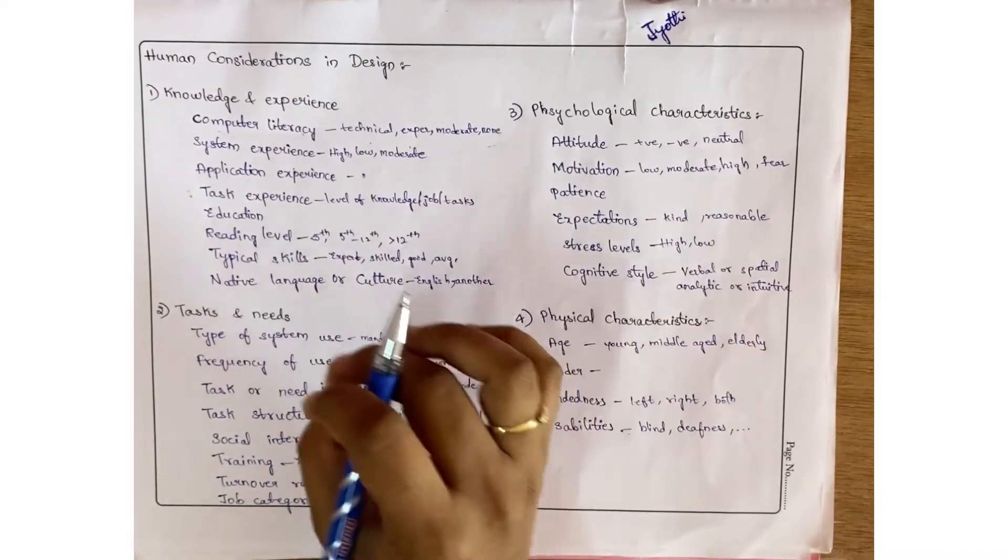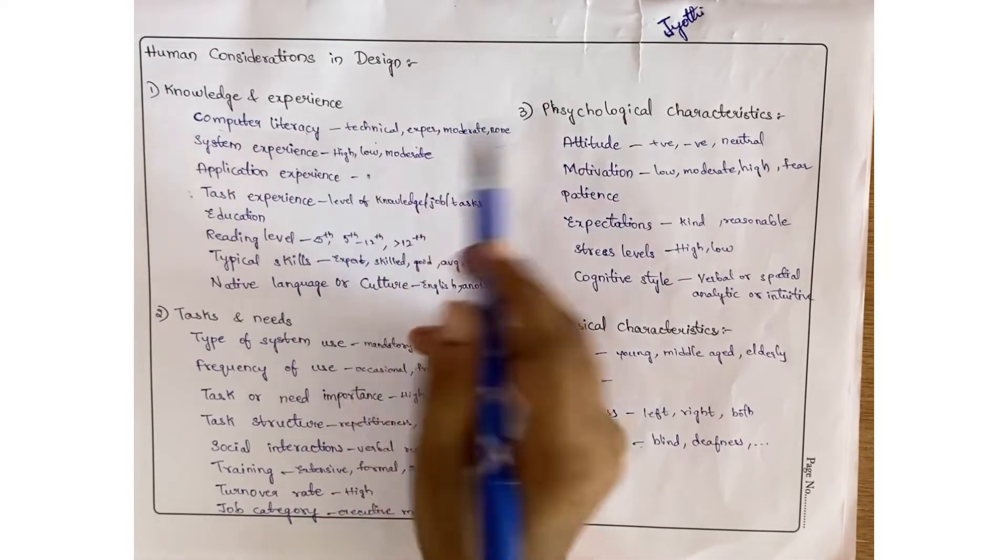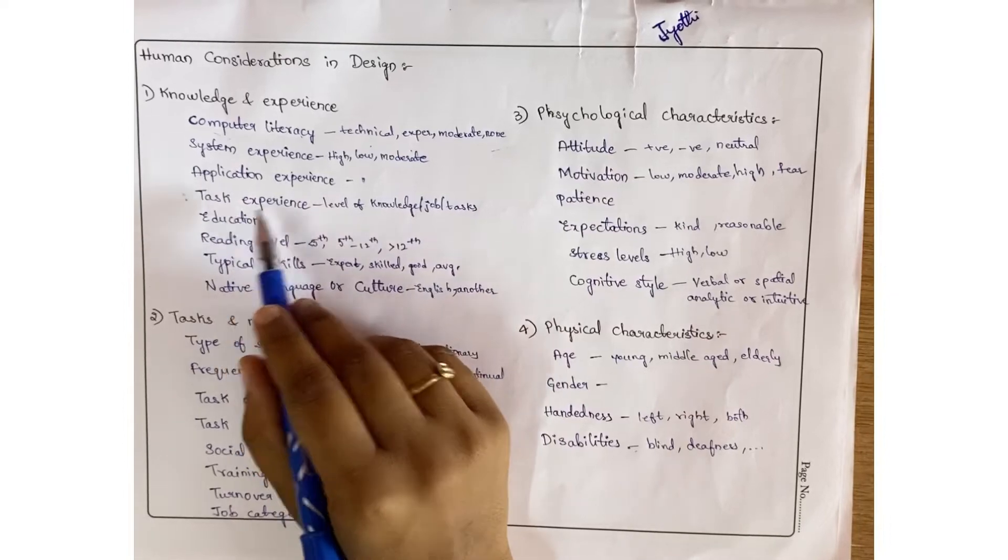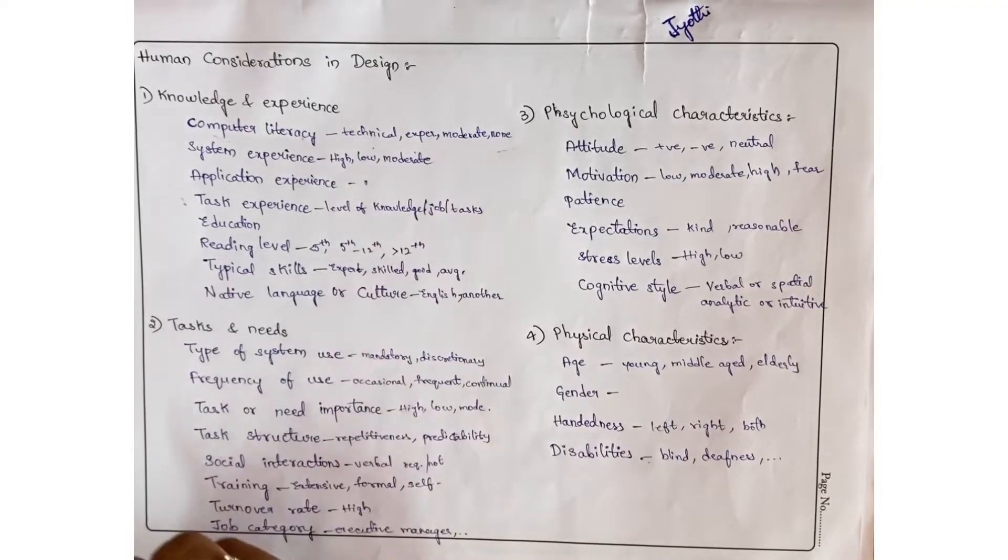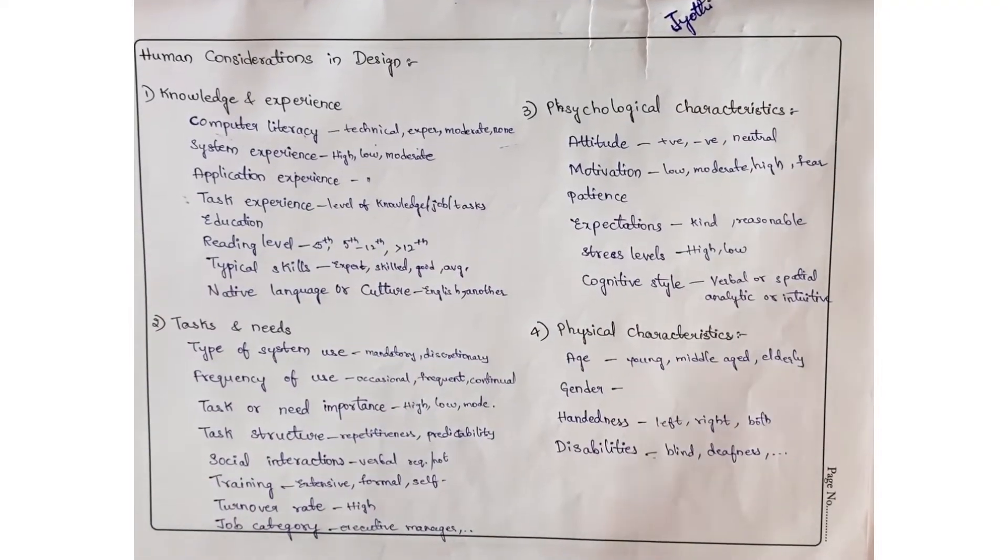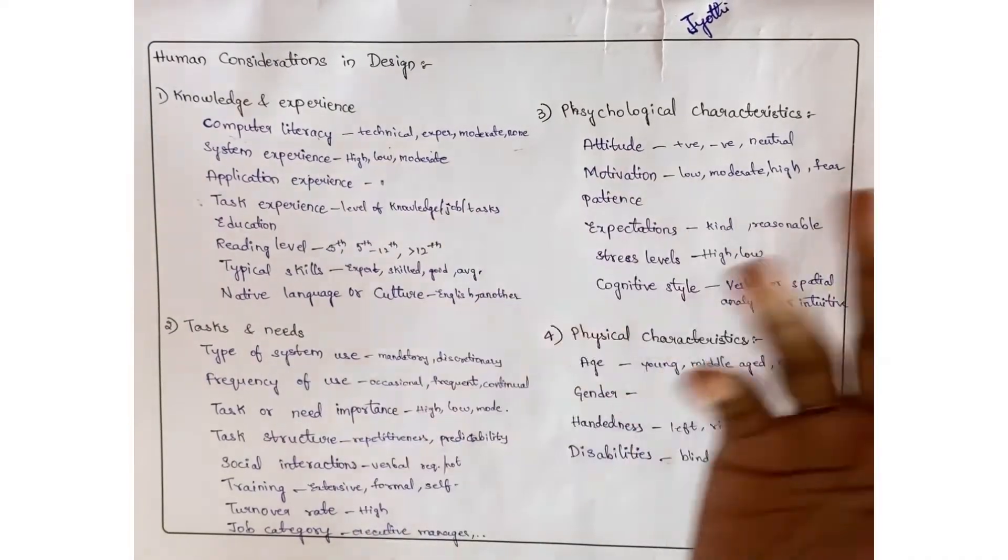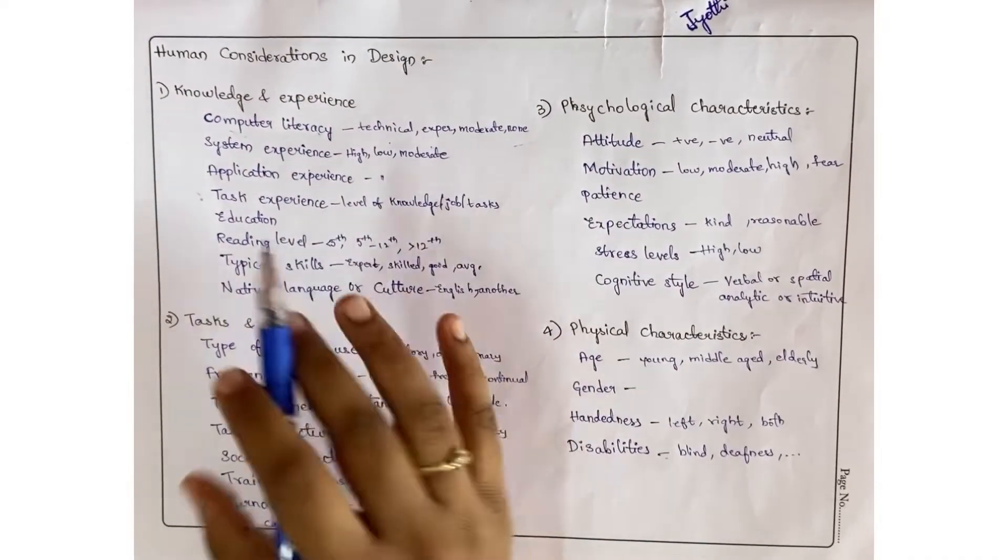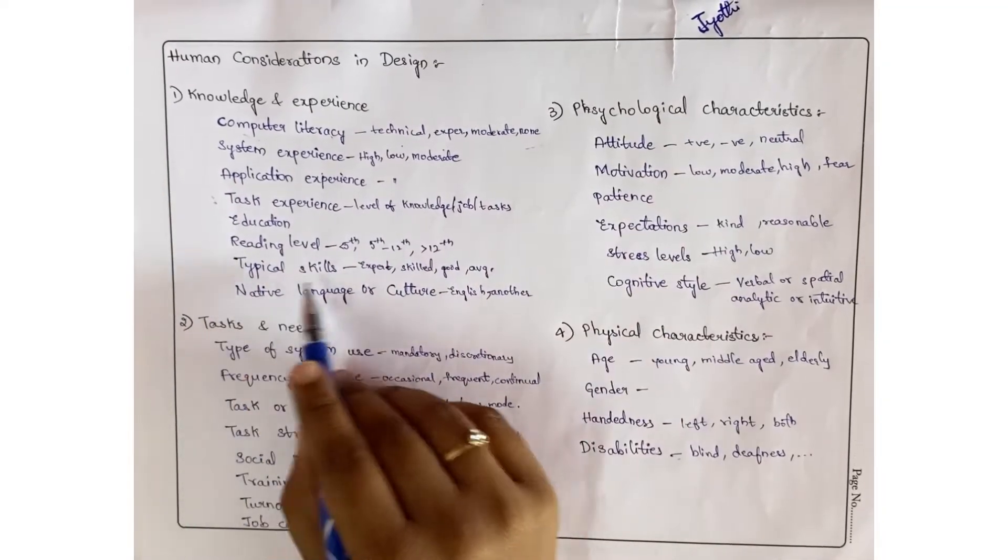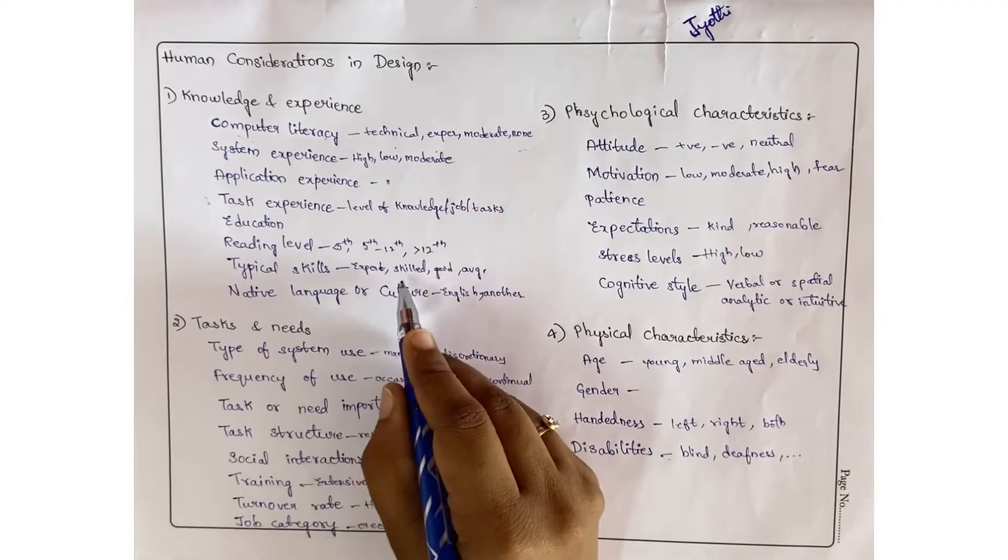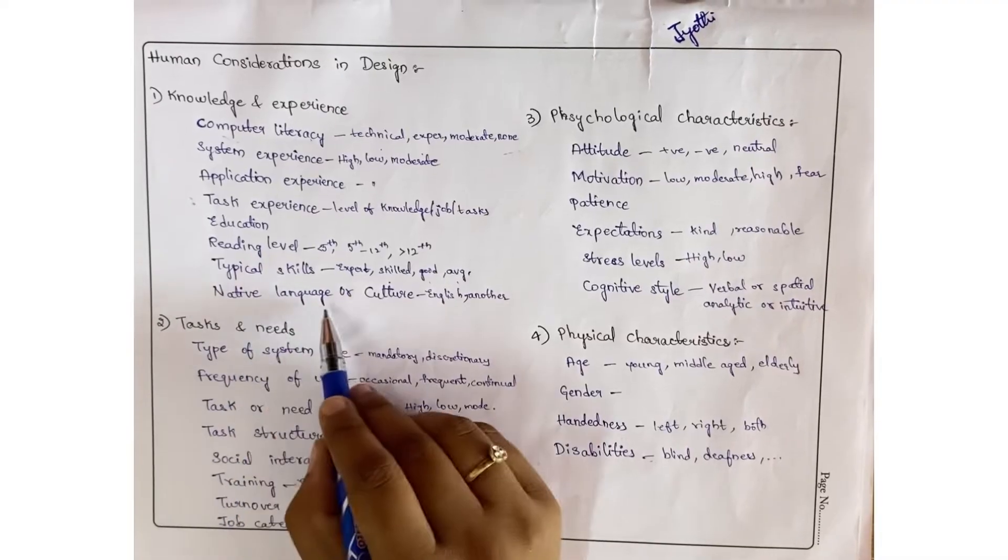Application experience is also the same - high, low, or moderate. Task experience is like the level of knowledge he has in the job. Task education is like high school, college, graduation, post graduation. Reading - less than fifth grade, fifth to twelfth grade, or more than twelfth grade. Coming to typical skills, he may be expert, skilled, good, average, or normal. Native language or culture - he can speak English or any other language.